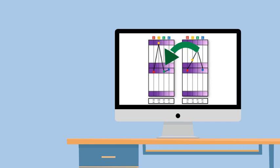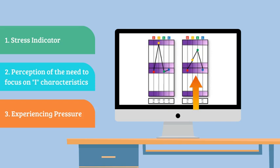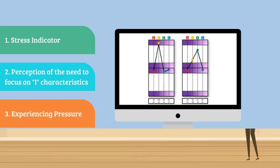The teacher's S-trait was suppressed, indicating she might be feeling stressed. The teacher had a perception that she needed to emphasise her I characteristics. The elevation of Profile 2 revealed that there was pressure in this teacher's environment.